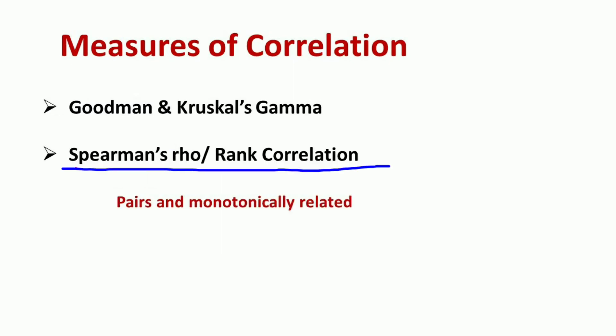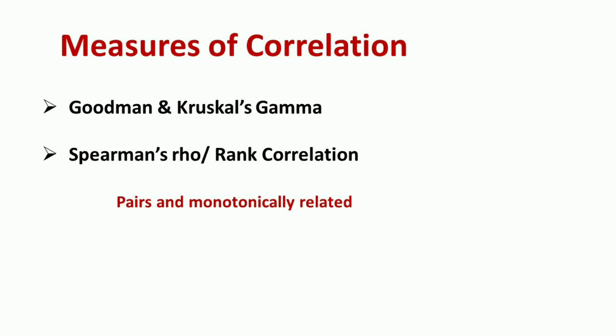The second measure is Spearman's rho or rank correlation. Spearman's correlation measures the strength and direction of a monotonic association between two variables. A monotonic relationship means both variables increase together or decrease together. These two variables represent paired observations. We use Spearman's rank correlation when measuring the direction and strength of monotonic association between two variables.